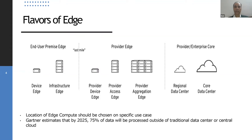We just have to figure out where exactly the edge compute for your application would reside. Central cloud will still continue to play its role for all non-time-sensitive applications — it'll still get onboarded with all non-real-time applications. But edge compute is going to aid the central cloud architecture where you need real-time response in some applications. Both these architectures would complement each other moving forward.